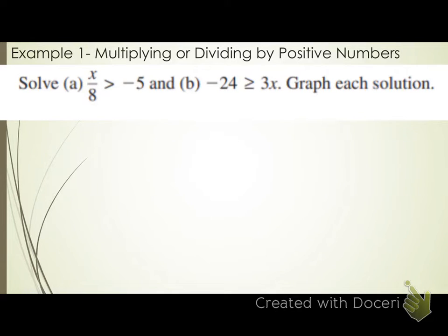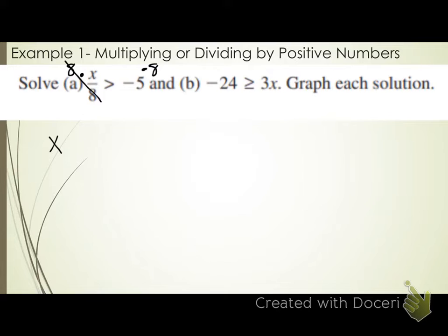Letter A: x over 8 is greater than negative 5. Our goal is to get the variable by itself. Is x by itself? No. What number is with it? 8. What's the operation between x and 8? Division. Inverse of division is multiplication. So I need to multiply both sides by 8. That cancels the 8 on the left, leaving me with x on the left and 8 times negative 5 on the right.